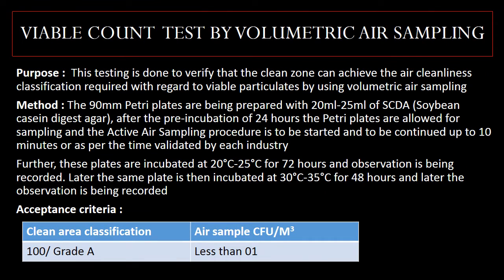The last but most important qualification test is the viable count test by volumetric air sampling method. This testing is done to verify that the clean zone can achieve the air cleanliness classification required with regard to viable particulates using volumetric air sampling. During execution, 90 mm petri plates are prepared with 20 ml to 25 ml of SCDM (soybean casein digest agar). After pre-incubation of 24 hours, the petri plates are allowed for sampling and active air sampling is started and continued for up to 10 minutes, or as per the time validated for each industry.